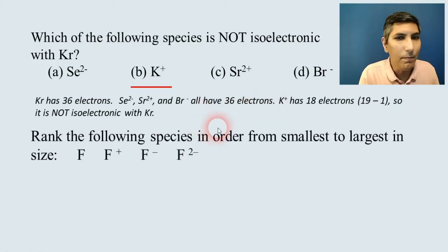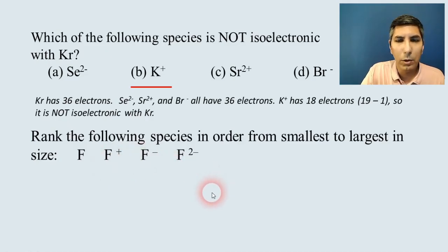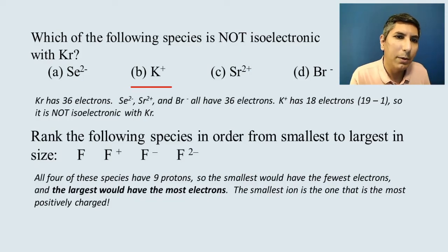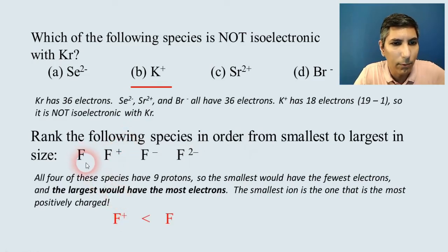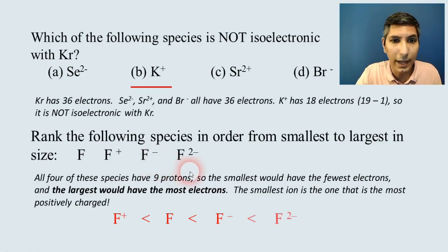Rank the following species in order from smallest to largest in size. Notice they are all versions of fluorine. The most positively charged is the smallest, and the most negatively charged is the largest. So the smallest is F⁺, then regular fluorine F, then F⁻, and the largest is the ion with the most negative charge, which is F²⁻.